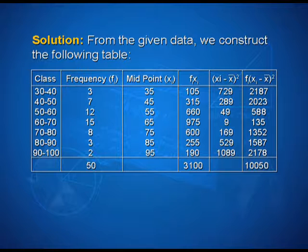The fourth column shows us the product of fi and xi, that is 3 into 35 gives us 105, 7 into 45 gives us 315, and we can calculate in the similar manner and also calculate the sum as 3100.